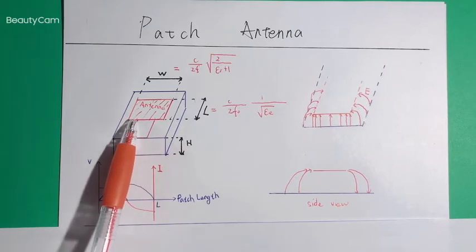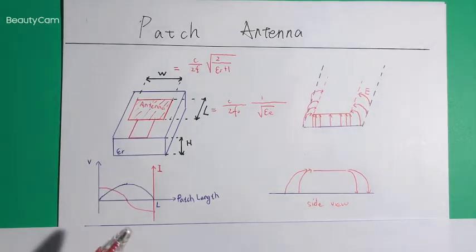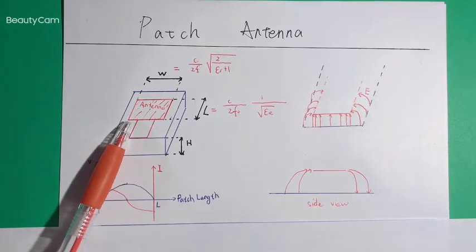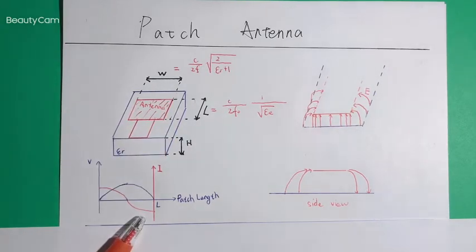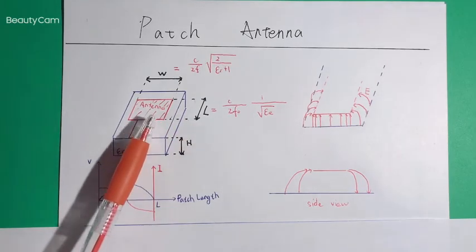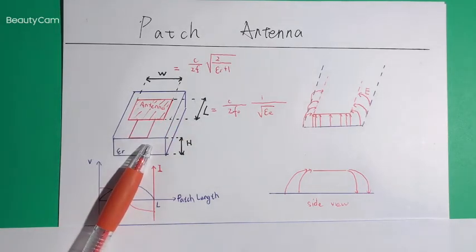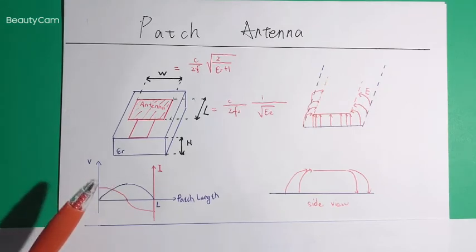If you read some textbooks, you will see this patch antenna looks like a slot antenna array. This edge can be equivalent to a slot antenna, and this edge can also be equivalent to a slot antenna. In the simulation part I will show you: once we cut two slots on a microstrip line, the radiation pattern of the patch antenna and the slot antenna are the same.